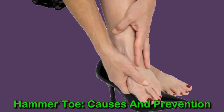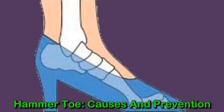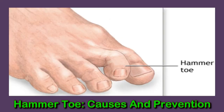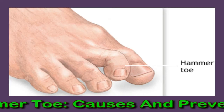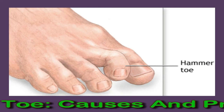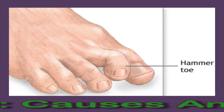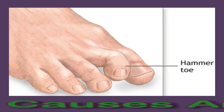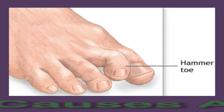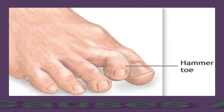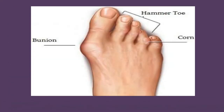A hammer toe is a toe that has an abnormal bend in its middle joint, making the toe bend downward to look like a hammer. This painful condition forms due to an imbalance in the surrounding muscles, tendons, or ligaments that normally keep the toe straight. Hammer toes are flexible to begin with, but if not treated promptly, they may become fixed and require surgery to correct.